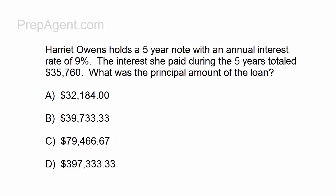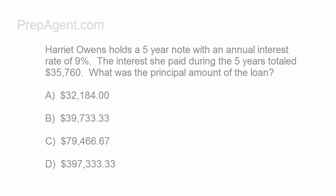Harriet Owens holds a five-year note with an annual interest rate of 9%. The interest she paid during the five years totaled to $35,760. What was the principal amount of the loan?